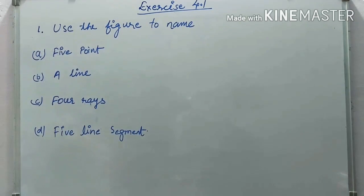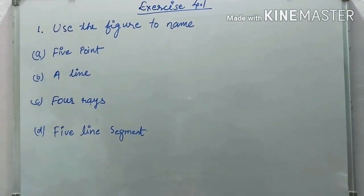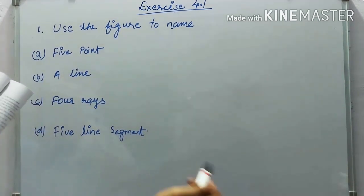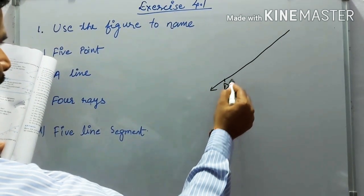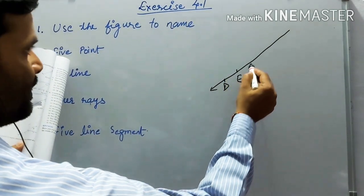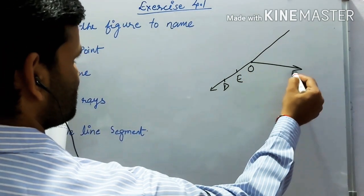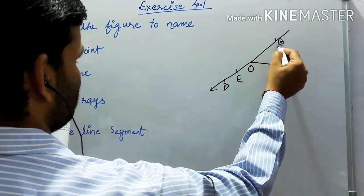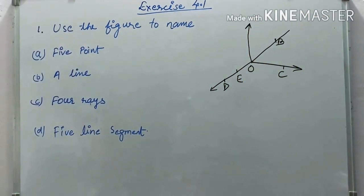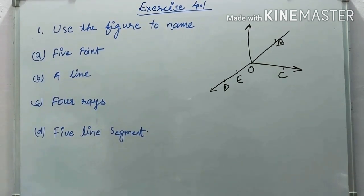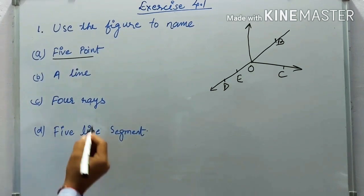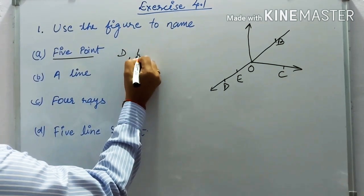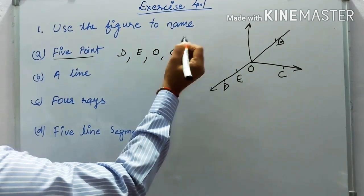Now let's start Exercise 4.1. Question one says: use the figure. We will first draw the figure using a sharp pencil and ruler — not freehand. The figure contains points C and B. Now using the figure, the first question asks to name five points, which are: D, E, O, C, and B.